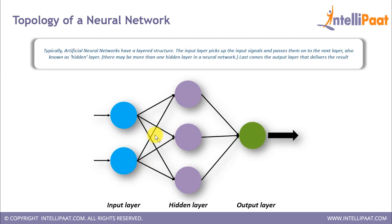The input layer picks up the input signals and passes them on to the next layer, known as the hidden layer. There can be more than one hidden layer in a neural network, and at last comes the output layer that delivers the result.